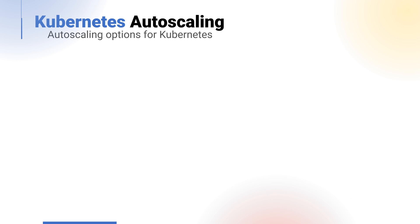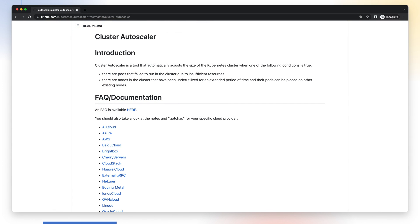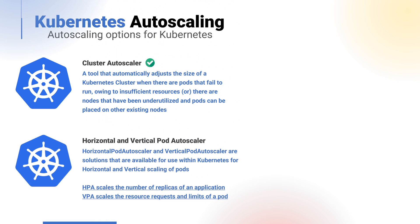Some specific areas worth knowing about: firstly, Cluster Autoscaler — a tool that can be used to automatically adjust the size of a Kubernetes cluster based on the workload, i.e., if there are insufficient resources or a node is underutilized. There's a related GitHub project for this. Next, for Kubernetes, there are Horizontal and Vertical Pod Autoscalers, often abbreviated as HPA and VPA. HPA scales the number of replicas for an application, whilst VPA scales the resource requests and limits of a pod — essentially what we saw earlier but at a pod level rather than a virtual machine.